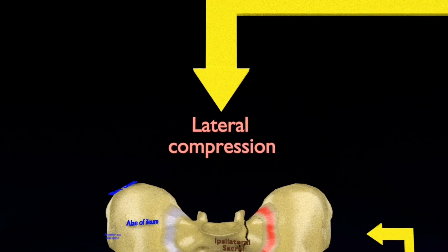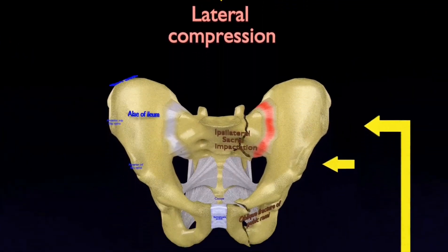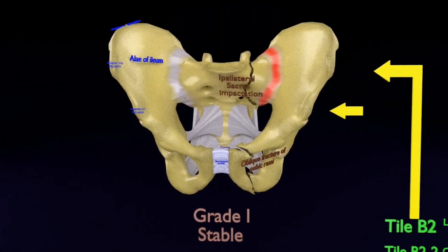The first type of the Young and Burgess classification, visualized here, is the lateral compression.